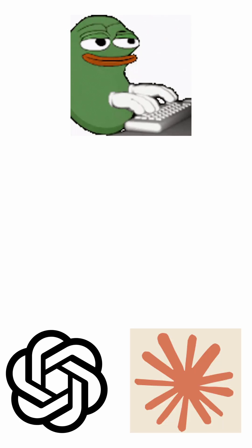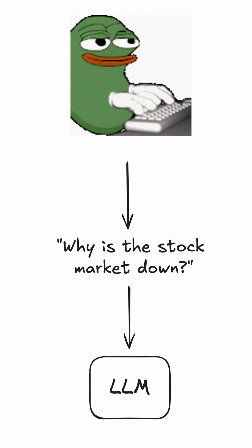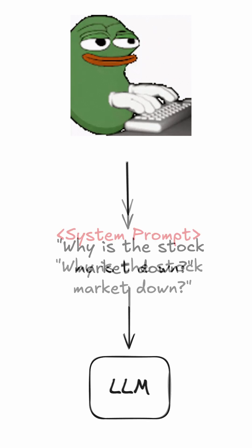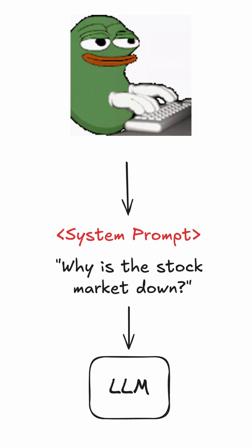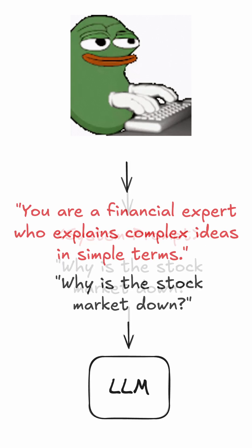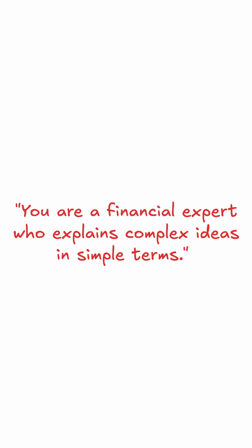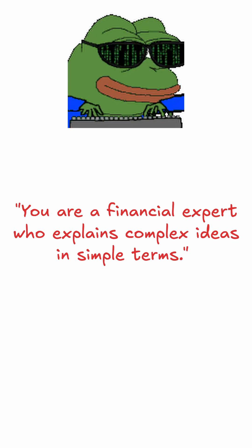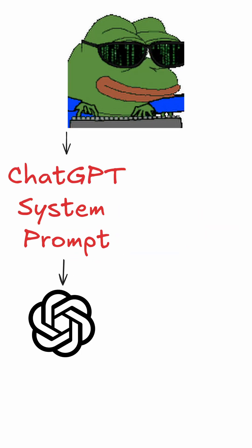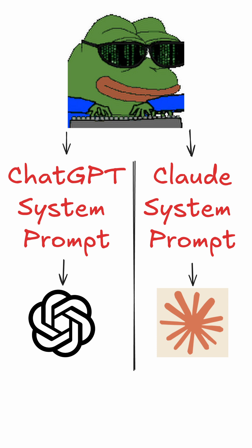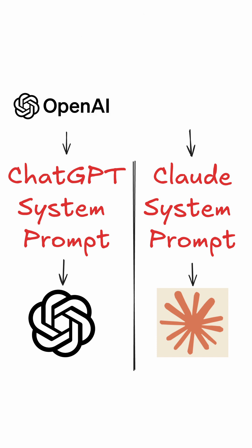When you chat with an LLM like ChatGPT or Claude, the LLM doesn't receive just your input text. Instead, it receives your text prepended by a system prompt, which contains general instructions about how the LLM should respond. This system prompt is typically created by whoever is serving the LLM, so in the case of ChatGPT and Claude, the system prompts are created by OpenAI and Anthropic, respectively.